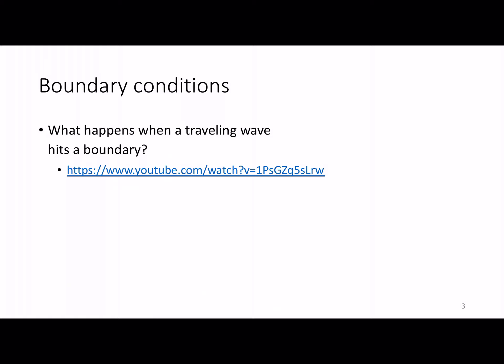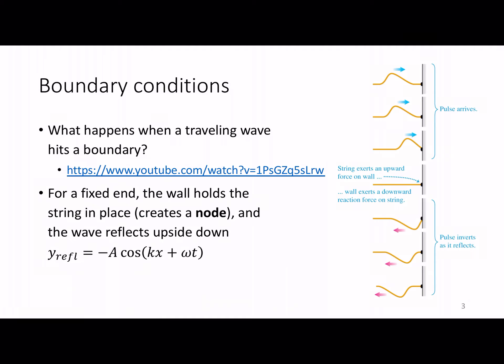Today we're going to pick up by asking what happens when a wave hits a boundary — specifically a fixed boundary, where the string is tied to a wall so that endpoint can't move. Here's an example: the spring is held fixed at the top. When a pulse travels along it and hits the boundary, it inverts — it comes back upside down.